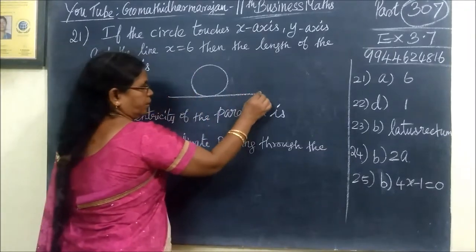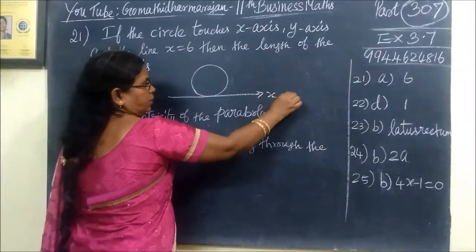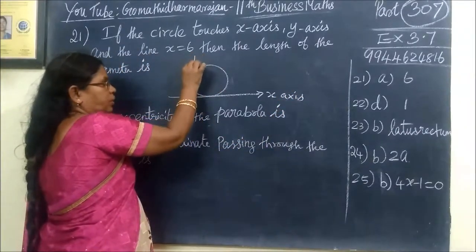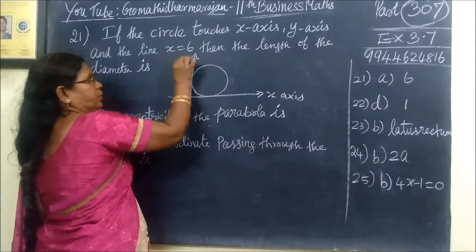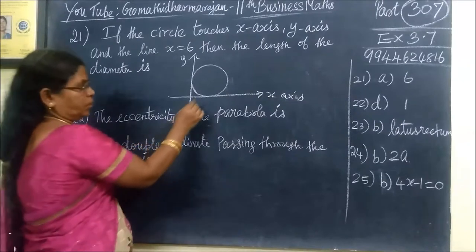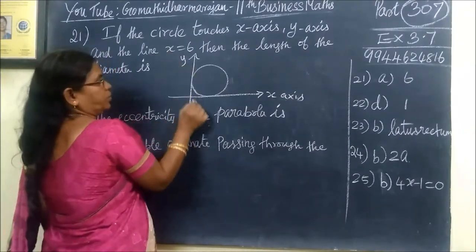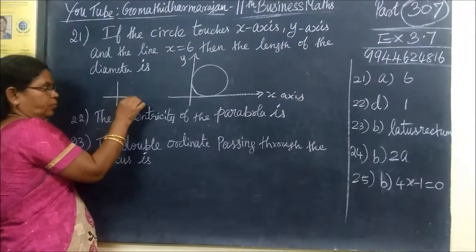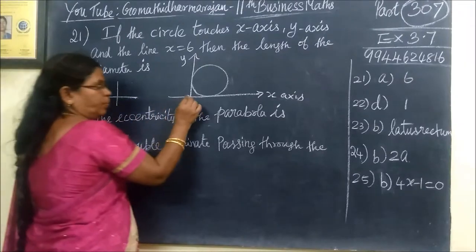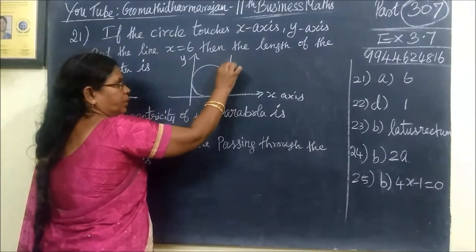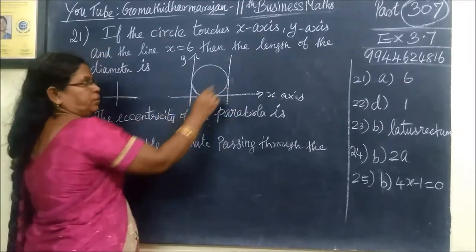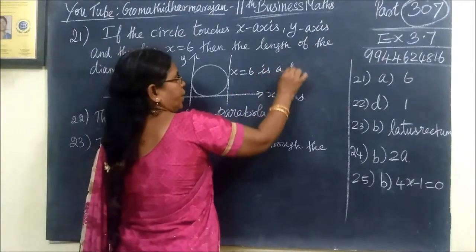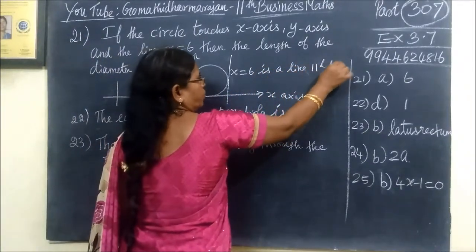The circle touches the x-axis. It touches one of the x-axis and y-axis. The y-axis is on one side, and x equals 6 is a line parallel to the y-axis on the other side. This is x equal to 6 — a vertical line parallel to the y-axis.